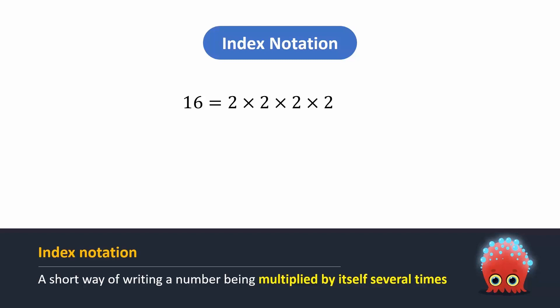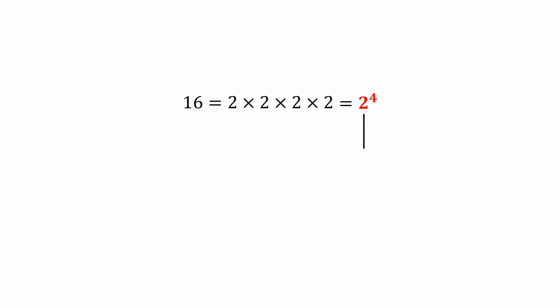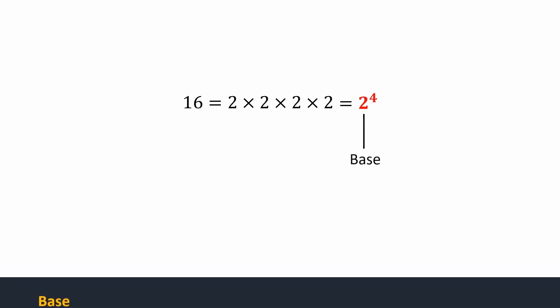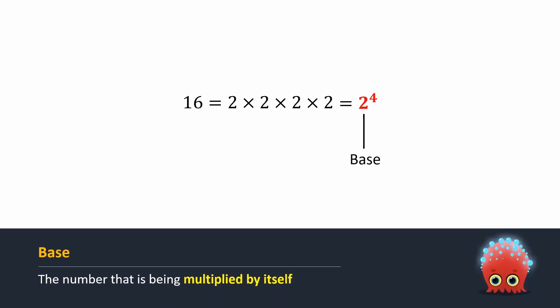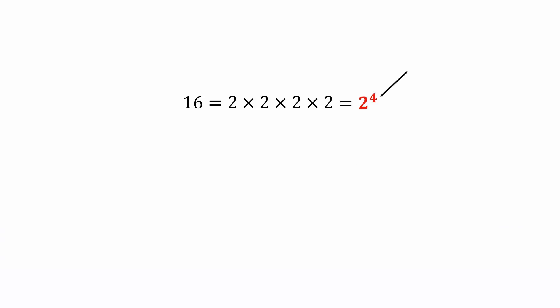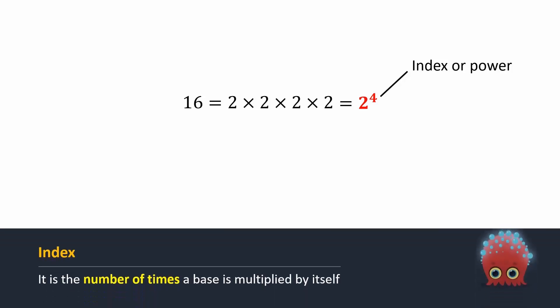So, we can write 2 multiplied 4 times in this form. It is read as 2 raised to the power 4. 2 is called the base. The number that is being multiplied by itself is known as the base. The number written on the top right of the base is called index or power.